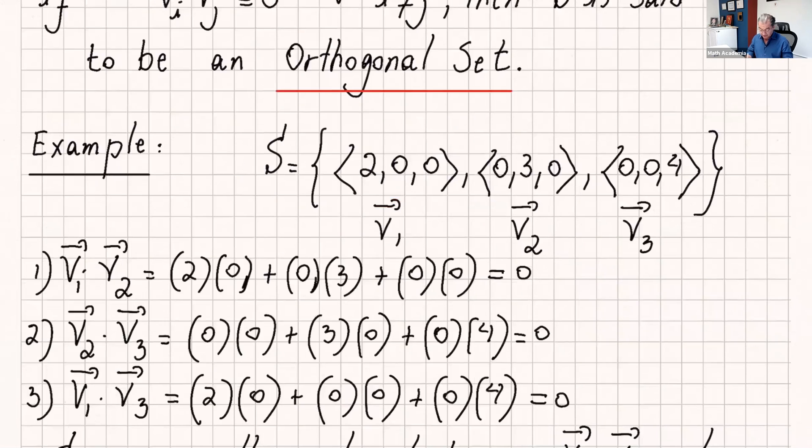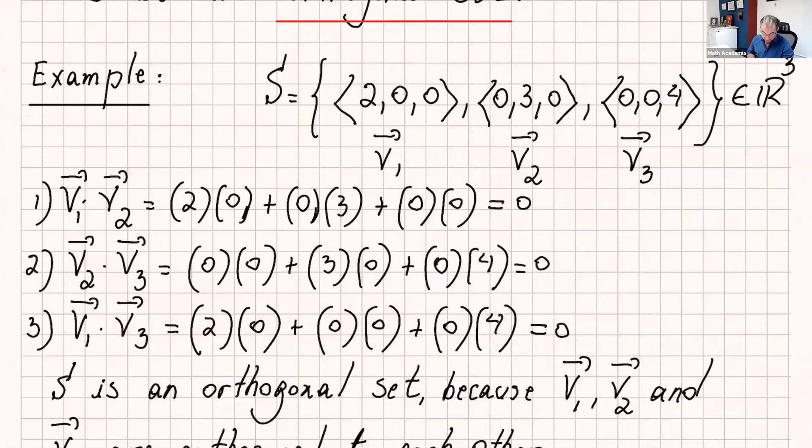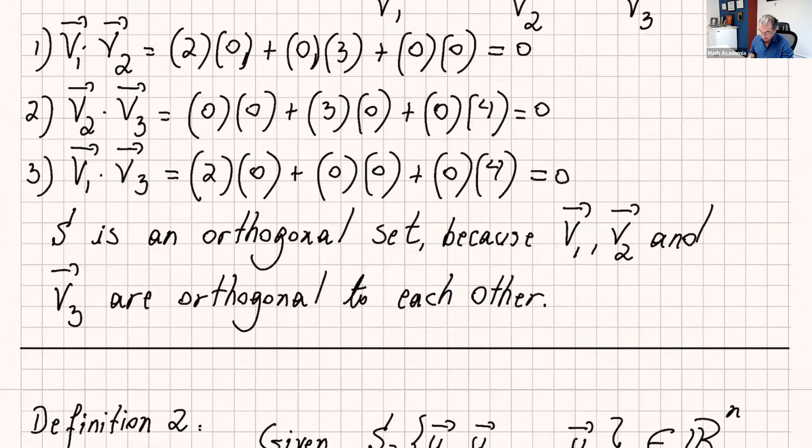And I put an example here. Let's say we are in R³, we have three vectors in R³. I did v1 dot v2 and if you use the formula you get zero, v2 dot v3 gives you zero, and v1 dot v3 gives you zero. So all these three vectors are perpendicular to each other or orthogonal to each other. S is an orthogonal set because v1, v2, and v3 are orthogonal to each other.